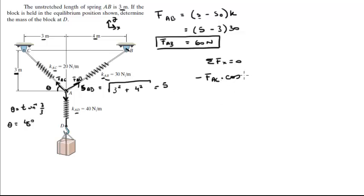So, minus FAC times the cosine of 45 degrees plus FAB times the cosine of this angle right here, which is easily found by doing the tangent inverse of the opposite over the adjacent. The opposite is 3, the adjacent is 4. So this angle is equal to 36.87 degrees. Cosine of 36.87 degrees, and that is equal to 0.